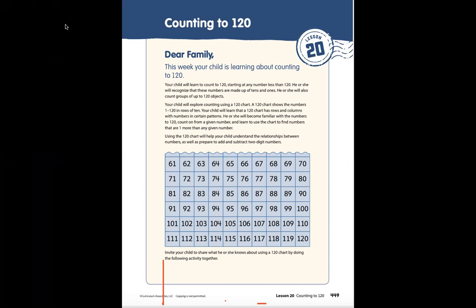Your child will learn to count to 120, starting from any number less than 120. He or she will recognize that these numbers are made of tens and ones, and will also count groups of up to 120 objects.